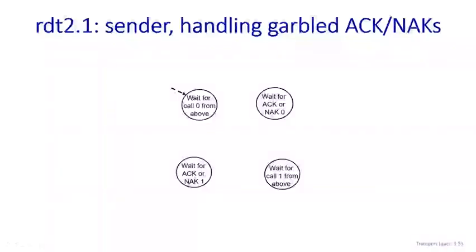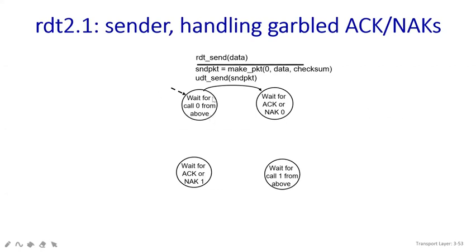Welcome students. Today's class is a continuation of the last class on RDT 2.0 — reliable data transfer. Today we are going to see RDT 2.1. In RDT 2.1, we will look at how the sender and receiver handle garbage acknowledgements and negative acknowledgements. You can see a picture here showing the stage 'wait for call 0 from above', where the system waits for an acknowledgement or negative acknowledgement for packet 0.